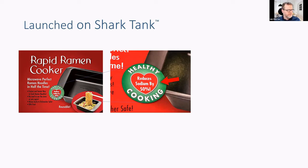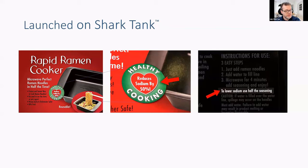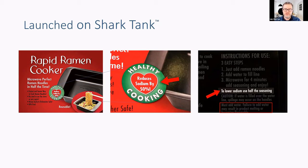It says 'healthy — reduces sodium by 50%.' I got thinking that's pretty clever; there must be some great physics or biology inside this thing. But when you read the back of the package — which is what you don't get when you buy on Amazon — it says to lower the sodium, just half the seasoning. And it also says 'must add water,' because if you use this thing in a microwave without water, it will actually melt. So how does that relate to lighting?